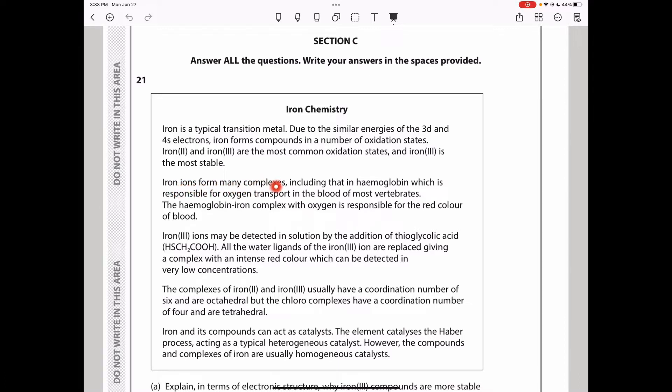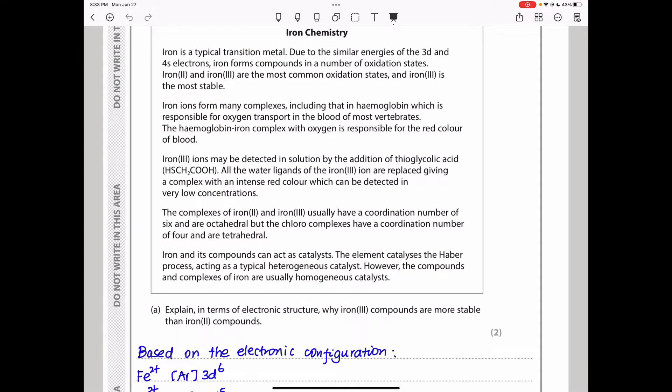Iron forms many complexes including that in hemoglobin, which is responsible for oxygen transport in the blood of most vertebrates. The hemoglobin iron complex with oxygen is responsible for the red color of blood. Iron and its compounds can act as catalysts. The element catalyzes the Haber process, acting as a typical heterogeneous catalyst. However, the compounds and complexes of iron are usually homogeneous catalysts.